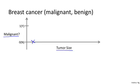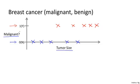Let's say your dataset has a tumor of this size that turned out to be benign, one of this size, one of this size, and so on. And sadly we also saw a few malignant tumors — one of that size, one of that size, and so on. So in this example I have five examples of benign tumors and five examples of malignant tumors with a vertical axis value of one. Let's say a friend has a breast tumor whose size falls around a certain value. The machine learning question is: can you estimate what is the probability that the tumor is malignant versus benign?